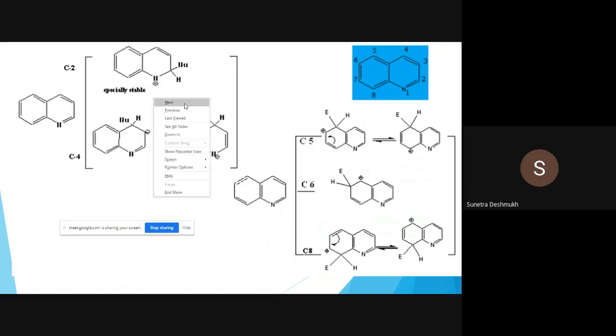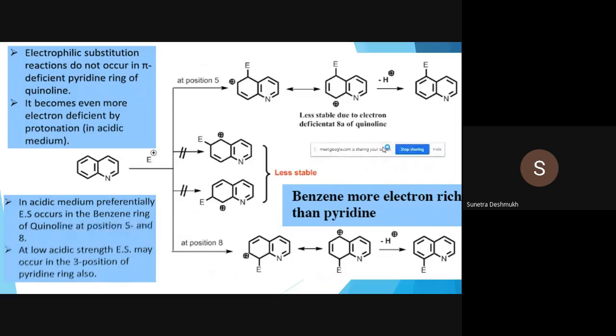Now we will go for electrophilic substitution in case of quinoline. Here I have given quinoline undergoing electrophilic substitution. We have different sites for electrophilic substitution, but before some time we have seen that the pyridinyl ring is electron deficient and the benzenoid ring is electron rich, as we have seen in our second or third slide. Obviously, electrophilic attack will occur on the benzenoid ring over here.